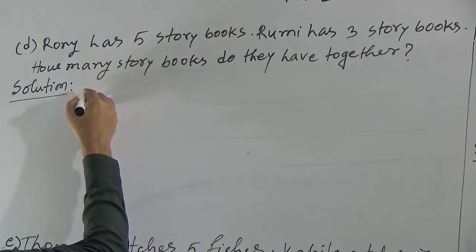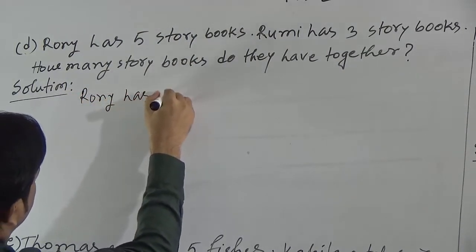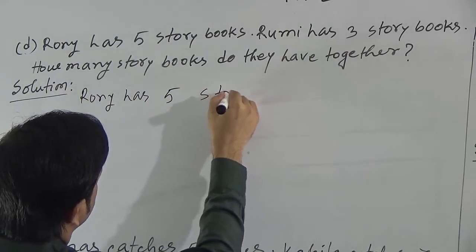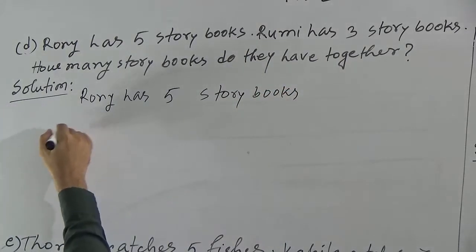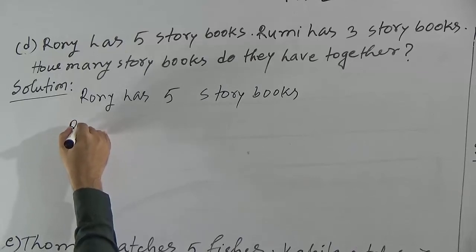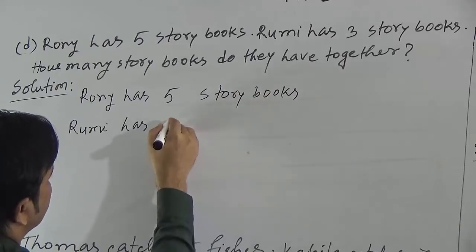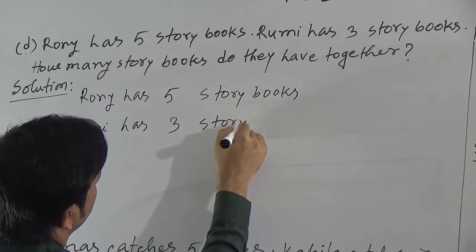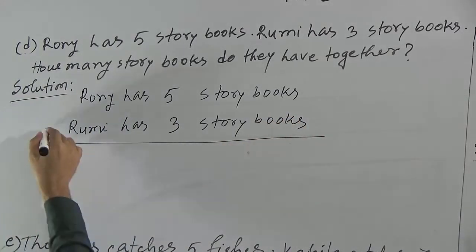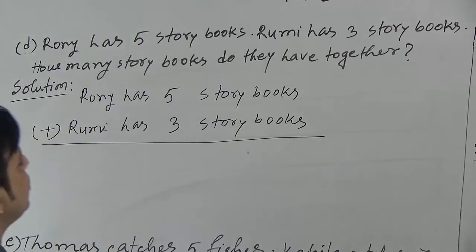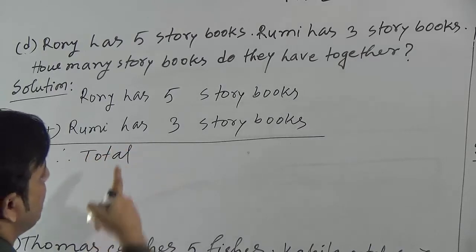So we can write: Ronnie has 5 storybooks, and Rumi has 3 storybooks. If we add these 2, we will get the total storybooks. Therefore, we can write 'total.' What will be the total?